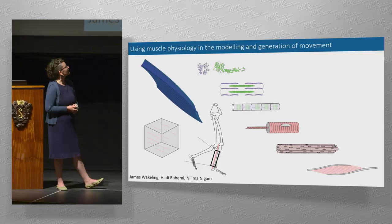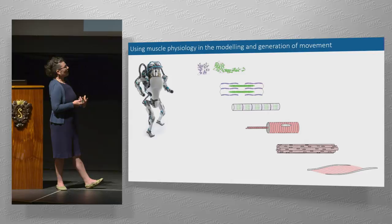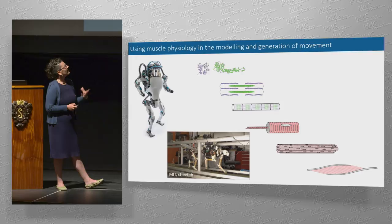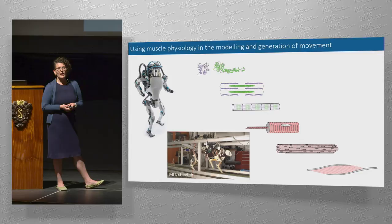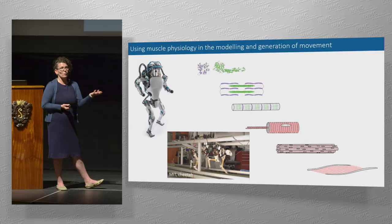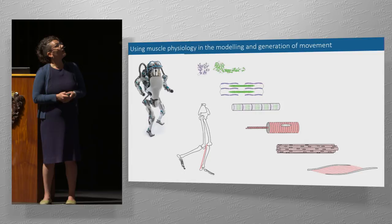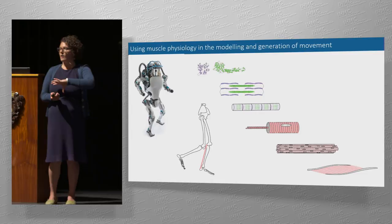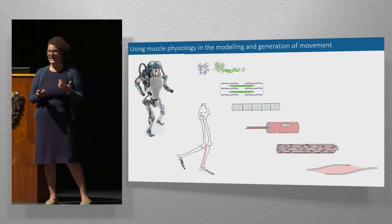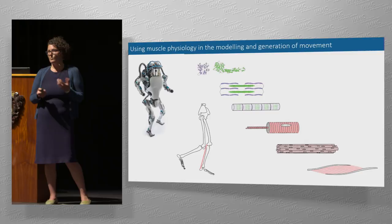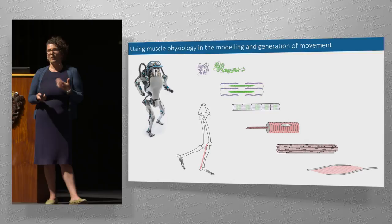In terms of generating movement, it's a little less obvious, but we're starting to see some success — the cheetah robot, for example. Either in the hardware or through the controls, we can start to introduce some of those compliant or damped elements, and we see pretty fast, economical movement that's maybe moving more towards the kind of locomotor competency of an animal. So we're starting to see on a pretty big scale some of those elements being introduced into movement generation.